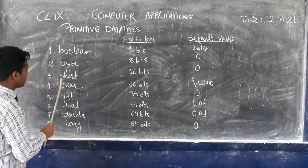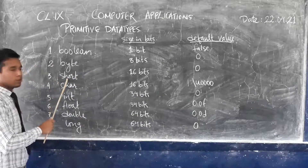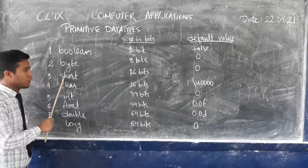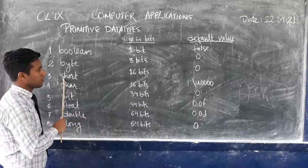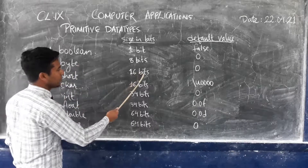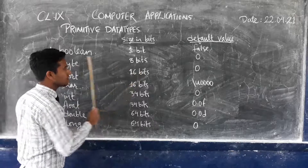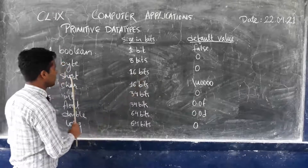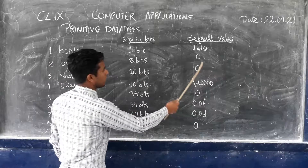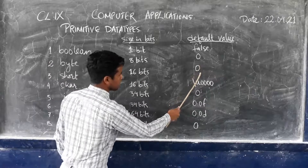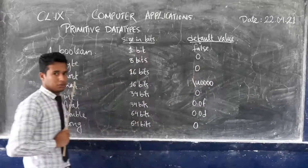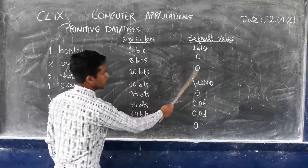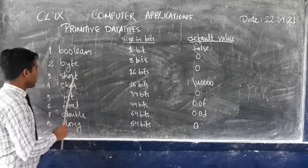Now the third one is short. Short is the third kind of primitive data type provided by Java. Its size in bits is 16, and the default value is also 0.